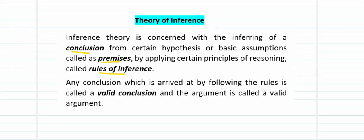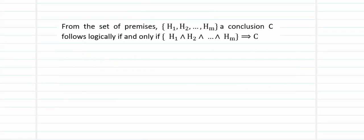Any conclusion arrived at by following these rules will be called a valid conclusion, and the argument can be referred to as a valid argument. Hence, the theory of inference is: a set of premises or hypotheses H1, H2 up to Hm leads us to a conclusion C logically if and only if H1 and H2 and H3 and Hm implies conclusion C.